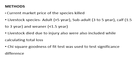To determine how much economic loss was incurred by local communities, current market prices of livestock species were taken from the market. Livestock species were divided into adult, calf, and weaner categories, and prices were set based on these age categories. Livestock that died due to injury during treatment were also included when calculating the total loss incurred to local communities. Chi-square goodness-of-fit test was used to test significant differences among different categories.